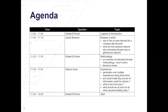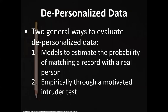Our agenda: I'll give a very brief introduction providing an overview of the topic to situate it in the broader context. Then Janice will provide the business context for doing empirical assessments of privacy risks — which are essentially re-identification attacks. Then I'll describe the methodology, and then Nathan will describe experiences doing these types of empirical assessments. We'll close off with Q&A. All times listed are Eastern.